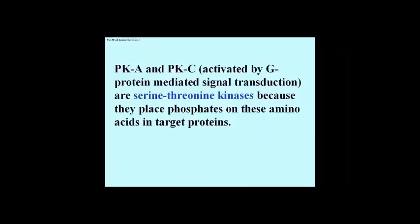Most amino acids, or amino acid side chains, can't be phosphorylated. PKA and PKC are both called serine-threonine kinases, which means that they catalyze the transfer of phosphate groups from an ATP to an appropriate serine or threonine side chain in the target proteins.